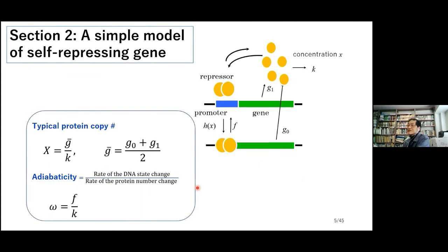This is the minimal model of gene expression. The repressor protein works as a dimer. The dimer protein binds on the promoter of its own gene. When the repressor binds, the rate of protein synthesis G0 is small; when it unbinds, the protein synthesis rate G1 is large. The synthesized protein is degraded with dilution rate constant K, the binding rate of the repressor is H, and the unbinding rate is F. We note that H is a function of protein concentration X — H increases as X increases.